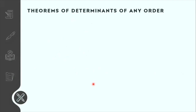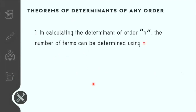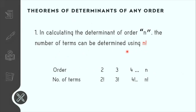Let us discuss the theorems of determinants of any order. Theorem number 1 states that we can already determine how many terms we will have by simply using n factorial. For example, if we're dealing with order 2, then 2 factorial equals 2, so we will have 2 terms. If order 3, then 3 factorial equals 6, so we will have 6 terms.